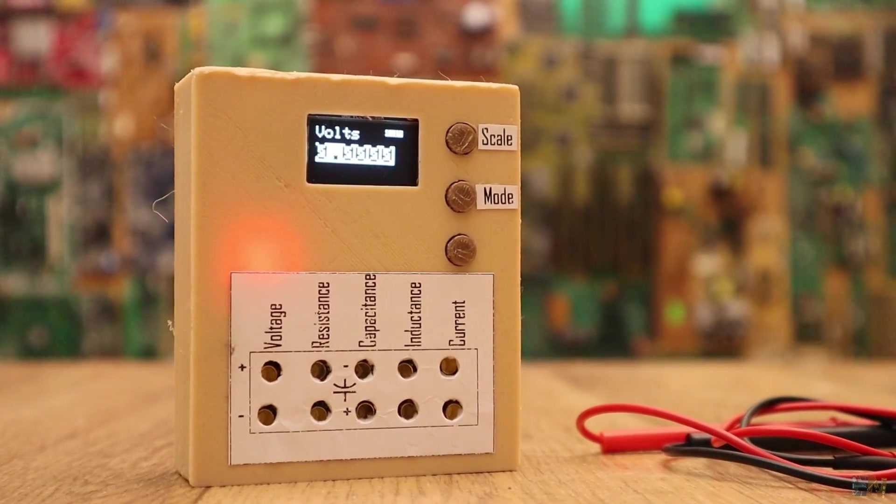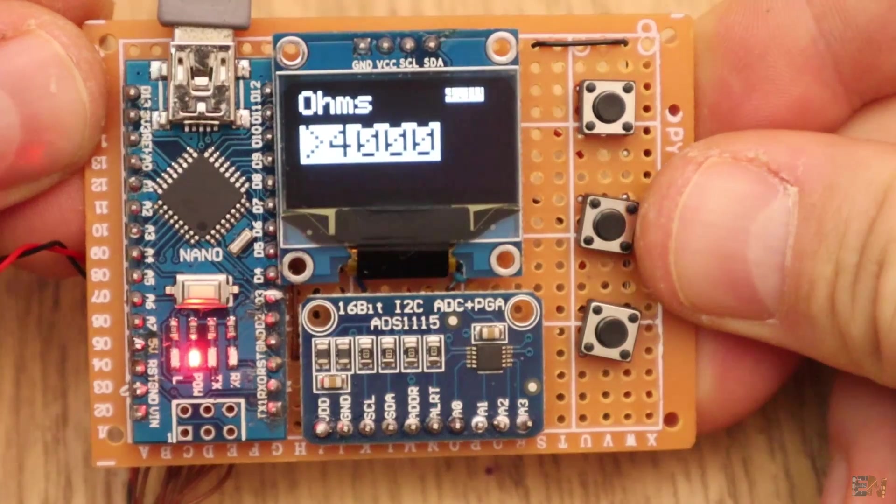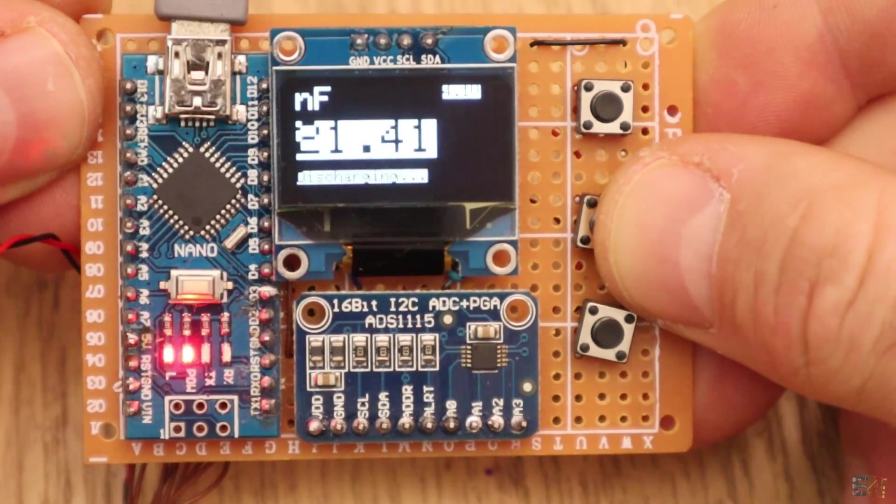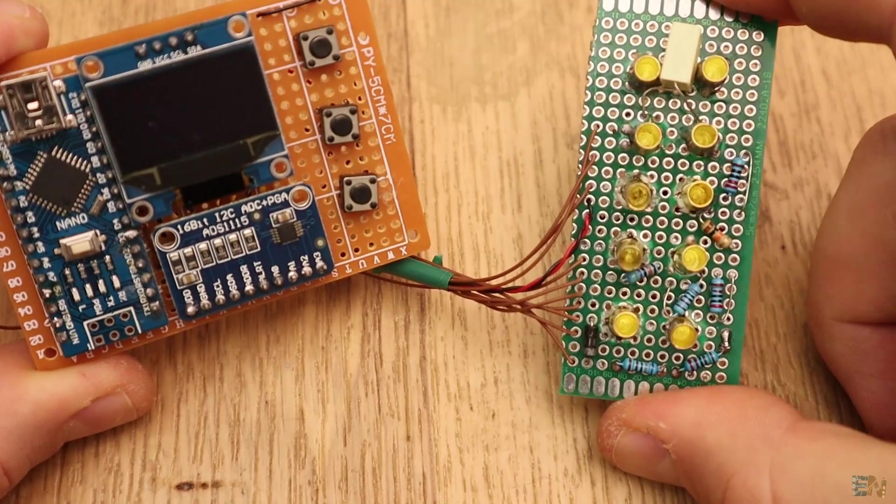This is a homemade multimeter made with Arduino, an OLED screen, a 16-bit analog to digital converter, an operational amplifier and some push buttons.